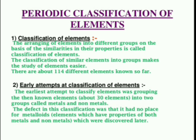Classification of Elements. The arrangement of elements into different groups on the basis of the similarities in their properties is called classification of elements. The classification of similar elements into groups makes the study of elements easier. There are about 114 different elements known so far.